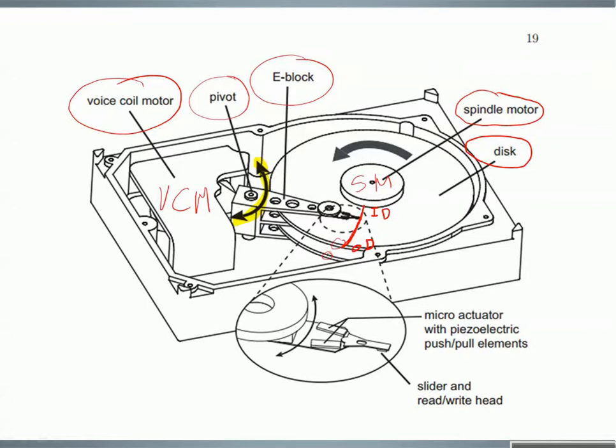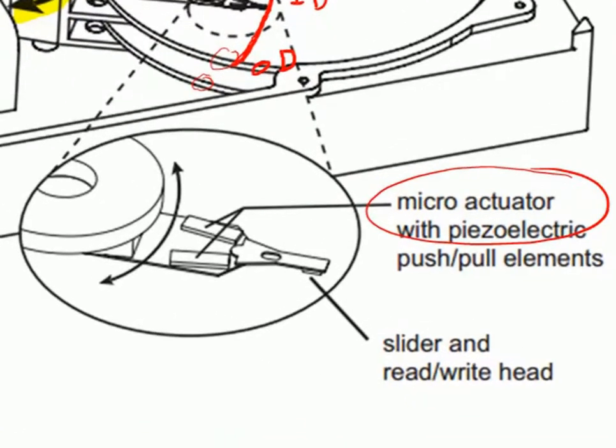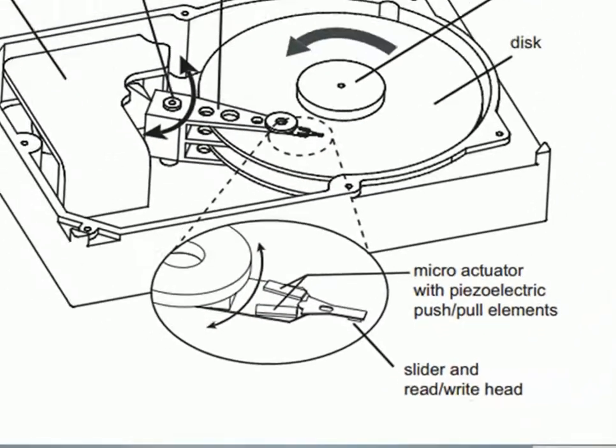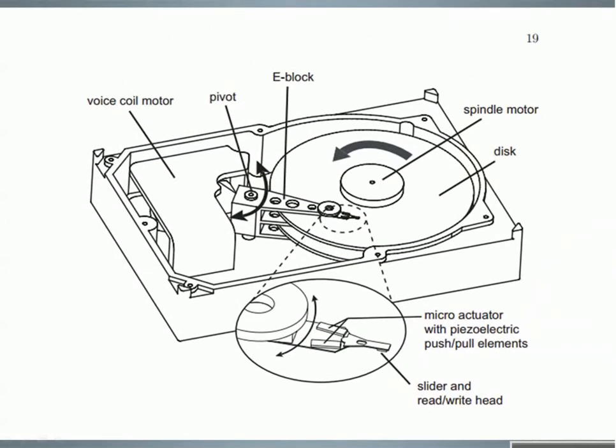The voice coil motor is the main actuator without which the control would be impossible. More sophisticated HDDs include a micro-actuator which is a piezoelectric device we can see in the zoom. This micro-actuator can micro-move the head and achieve higher resolutions. We haven't talked about tracks yet, but we will soon.